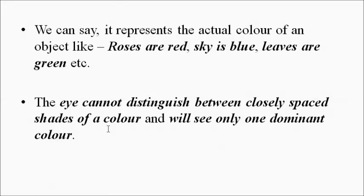The reason behind this is that the human eye cannot distinguish between closely spaced shades of color — closely spaced spectral components separated by small wavelength values. That's why it sees only one dominant color: red is red, green is green, blue is blue. The shade of color does not matter when hue comes into play.